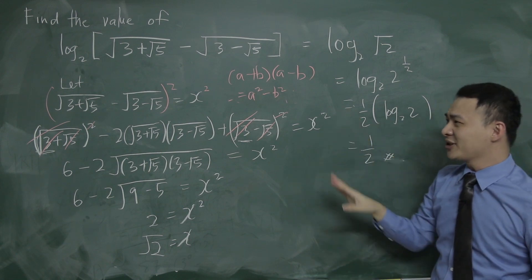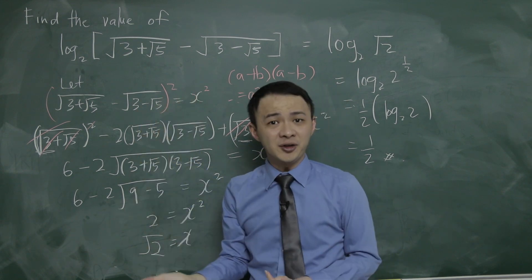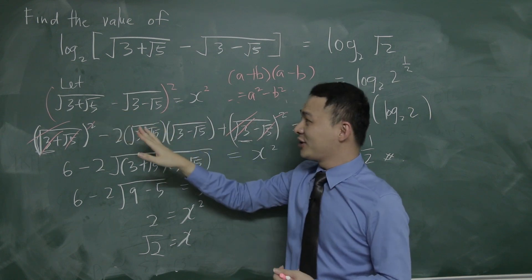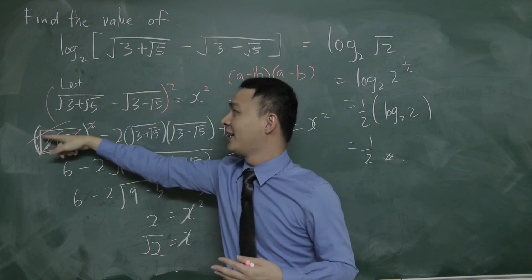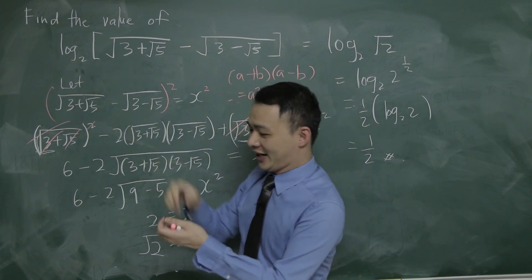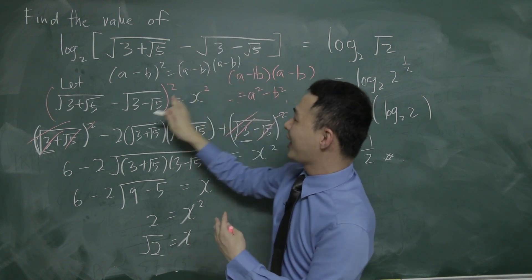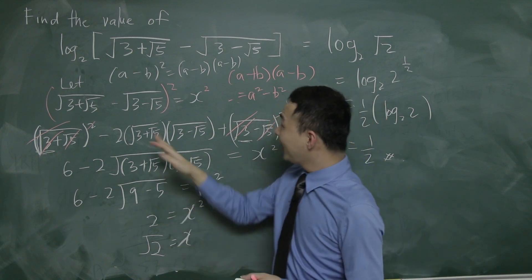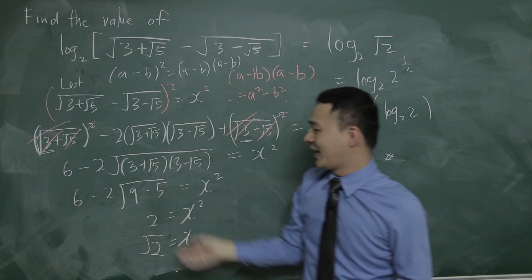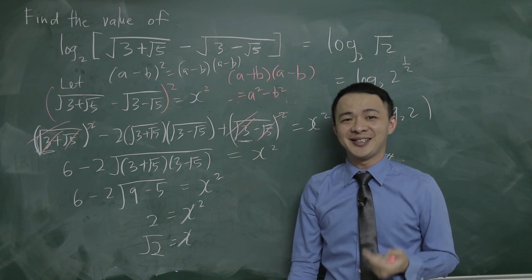For this kind of question, the square roots can look scary, but you need to find a way to eliminate them by squaring. Be very careful when squaring — a common mistake is to just cut off the square root directly without properly expanding (a−b)² as (a−b)(a−b). You can verify this on a calculator and get 0.5, but in an exam you need to show the working. I hope this short video helps you understand this kind of complicated question. See you in the next video, bye bye.